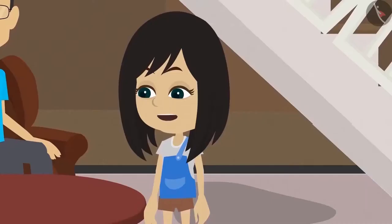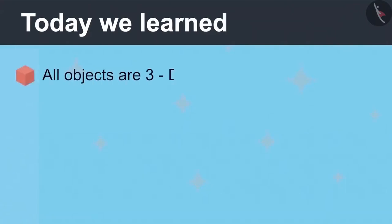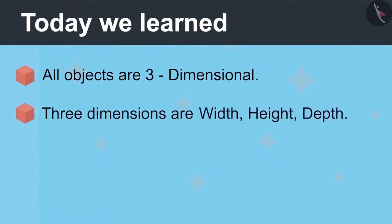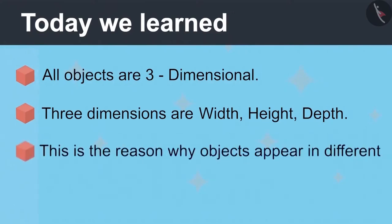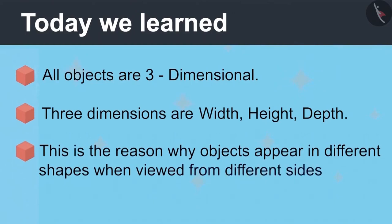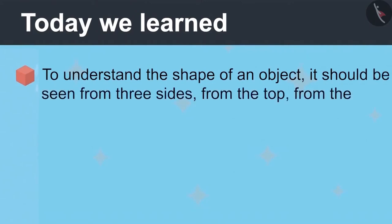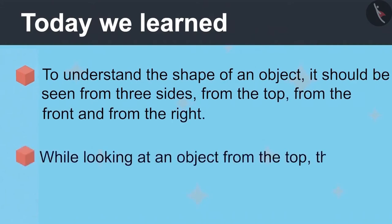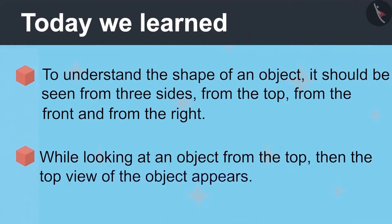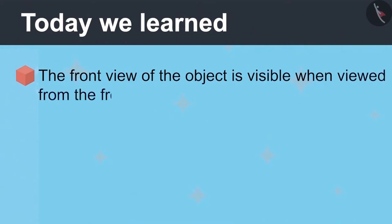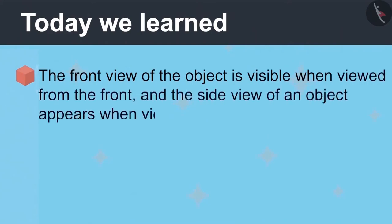What did you understand? Now I have fully understood that all objects are three-dimensional. The three dimensions are width, height and depth. Because of this, objects appear to be of different shapes when viewed from different sides. To understand the exact shape of an object, one must look at it from three sides: from the top, front and from the right side. While looking from the top, the top view appears. The front view is visible when viewed from the front. And the side view appears when viewed from the right side.